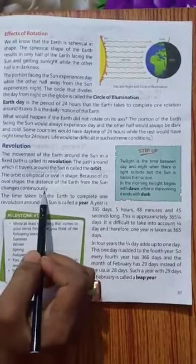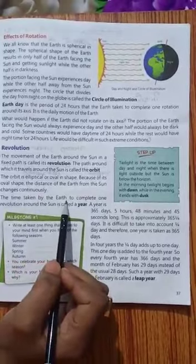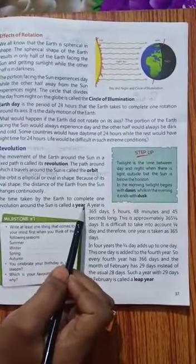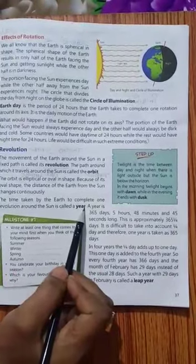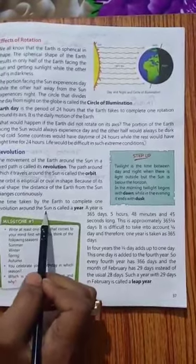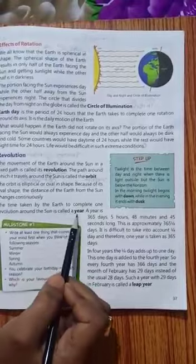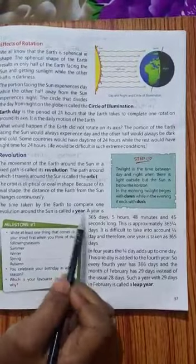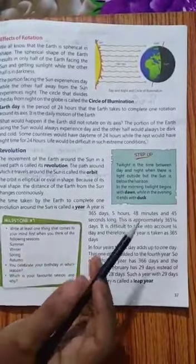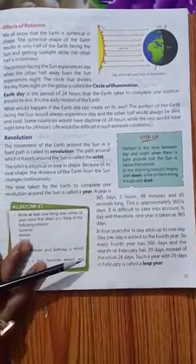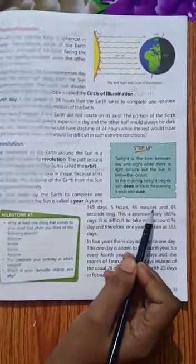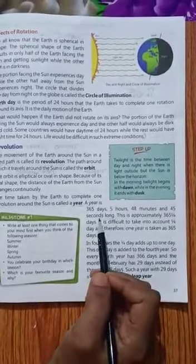The time taken by the earth to complete one revolution around the sun is called a year. Jo revolution hai around the sun, jo earth complete karti hai, woh kitne time mein? A year, ek saal mein complete karti hai. A year is 365 days, 5 hours, 48 minutes and 45 seconds long.